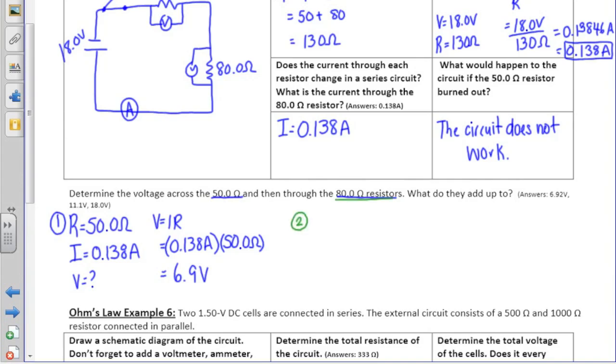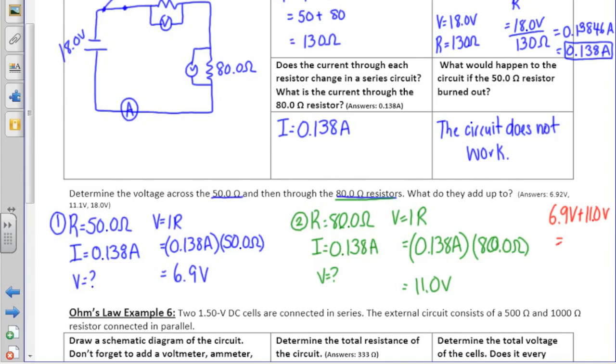We can now look at the resistance through the second resistor, which is the 80 ohm resistor. Because current doesn't change, we'll use the same current as we did before. And if we plug that into our calculator, we should get 11.0 volts. Now if we add our two voltages together, 6.9 volts plus 11 volts is 17.9 volts. This isn't the same as the 18 volts we started with because we rounded our answers in between.